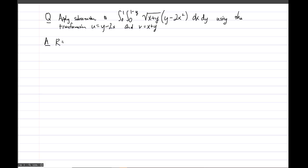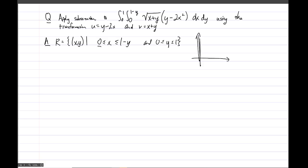Let's get an understanding of the region that the integral is currently written in. So in the xy-plane, staring at the integral, x should be between 0 and 1 minus y, and y should be between 0 and 1. So x between 0 and 1 minus y — x equals 1 minus y would be this line here. And if y only goes from 0 to 1, then it's this region here. So this shaded triangle is R, and this line here is x plus y equals 1.